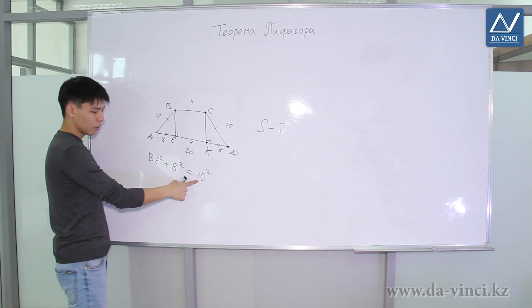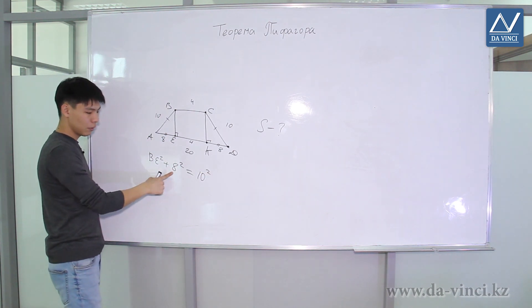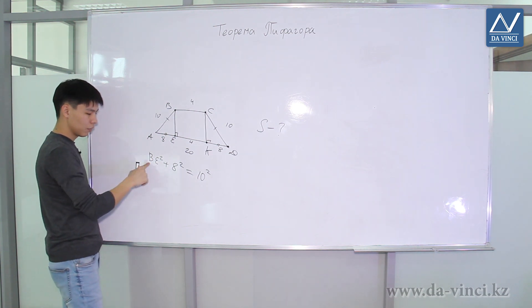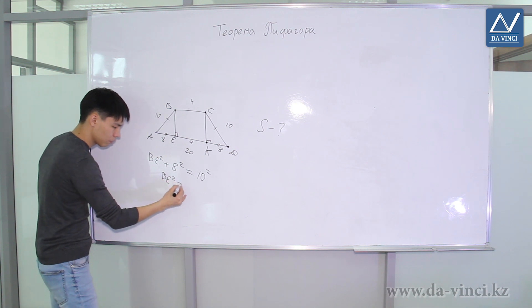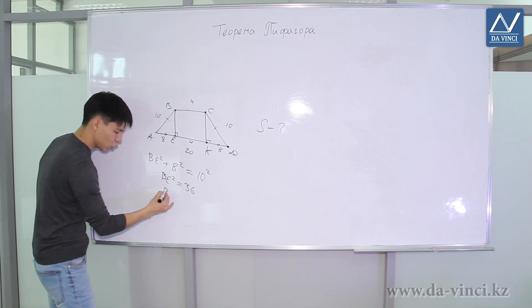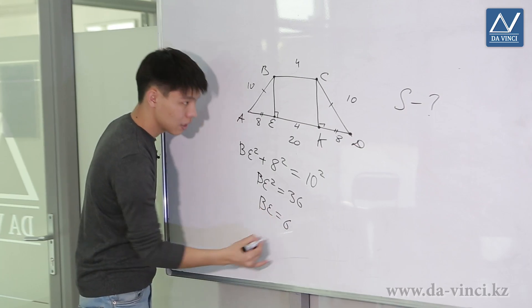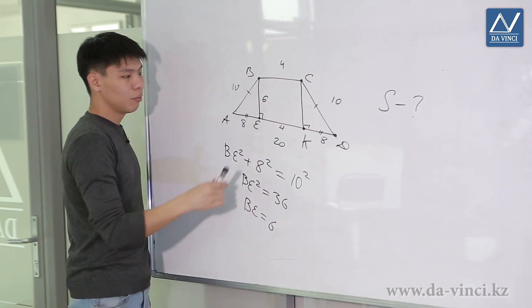It remains to be calculated. 10 squared is 100, 8 squared is 64, 100 minus 64 is 36. So BE squared is 36. That means that BE is equal to 6. Thus we have found the height of the trapezoid.